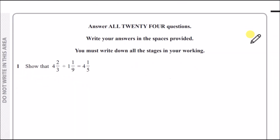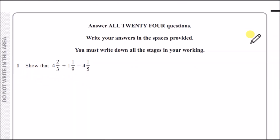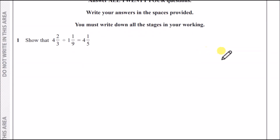Let's jump into question one. It says: show that four and two-thirds divided by one and one-ninth equals the right-hand side. For these 'show that' questions, the trick with any fraction problem is to rewrite the mixed fractions as improper fractions first.